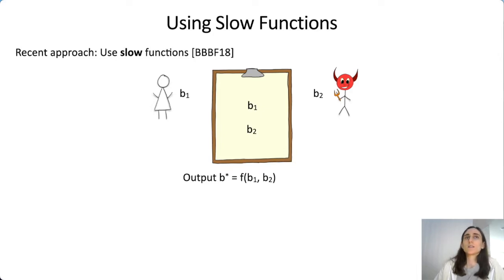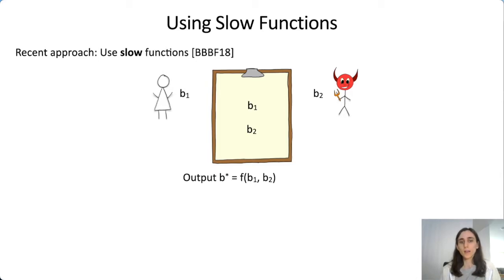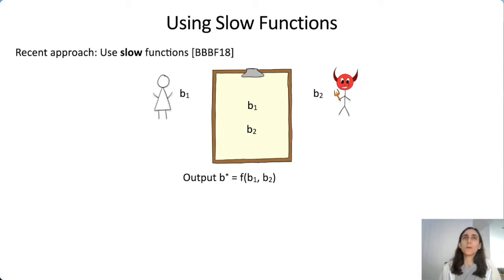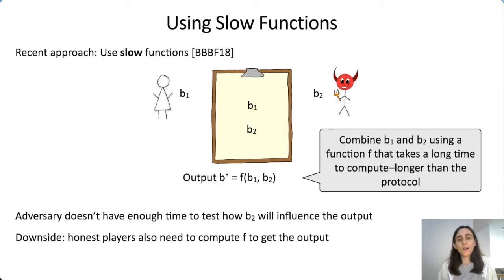A recent approach by Bonet et al. has been to mitigate this using a slow function. Bob could pick B2 based on B1 because he could compute the output in advance and see if he liked it. But if instead we compute the output as F(B1, B2) for some function that takes longer than the time allowed for the protocol, that fixes the problem—Bob won't be able to compute F(B1, B2) during the protocol. The downside is that Alice and all honest players will also have to compute this slow function to get the output.